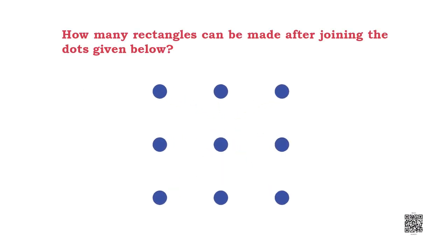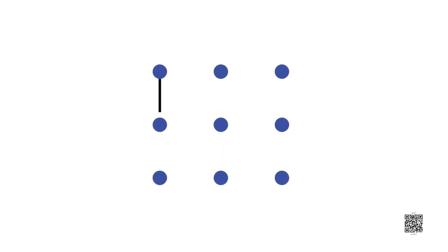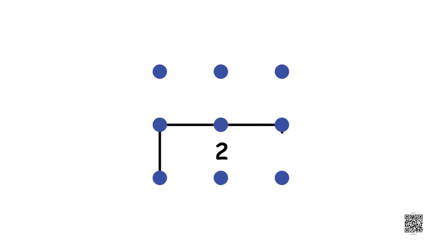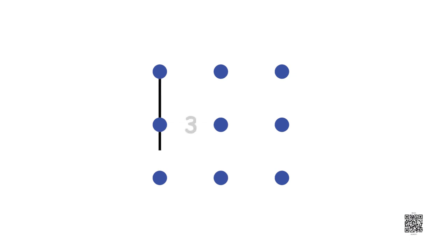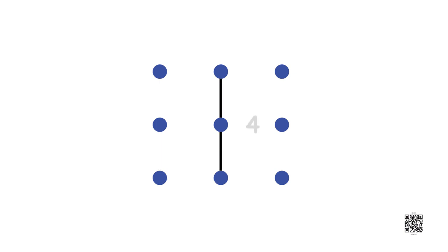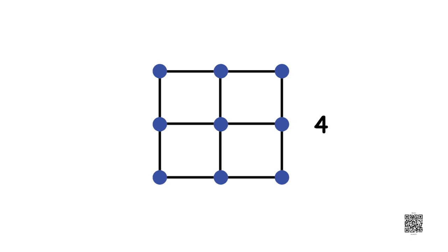How many rectangles can be made after joining the dots given here? There are nine dots given — just see how many rectangles can be made. The first rectangle is formed by connecting six points from top to bottom. The second rectangle is formed when we connect other six points from bottom to top. If you join six points on the left side, you get a rectangle, and similarly when you connect the six dots on the right hand side, you get a rectangle again. So we get four rectangles.